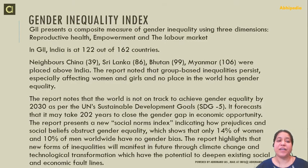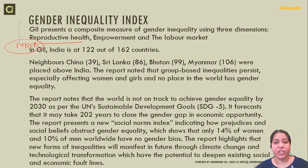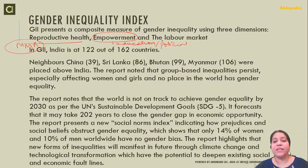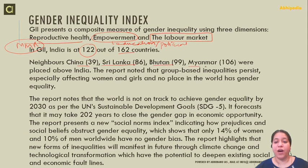The Gender Inequality Index is a composite measure of gender inequality using three dimensions: reproductive health (including maternal mortality rate, for which we have schemes like Janani Suraksha Yojana), empowerment (women's empowerment in education and political representation), and women's participation in the labour market. India ranks 122 out of 162 countries on the Gender Inequality Index. Better performing neighbors include China, Sri Lanka, Bhutan, and Myanmar.